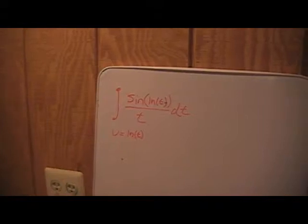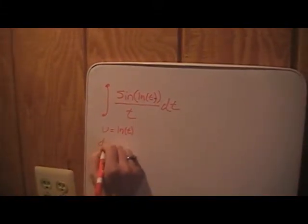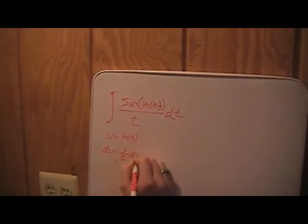Let u equal the natural log of t. And then the derivative of the natural log of t is 1 over t. So du equals 1 over t dt.